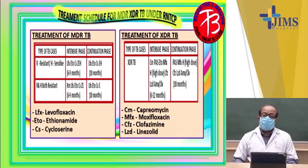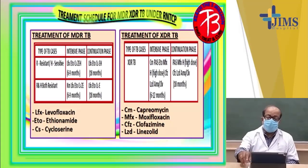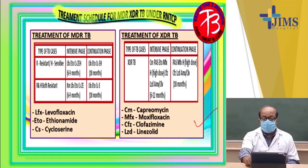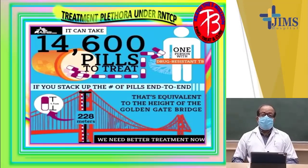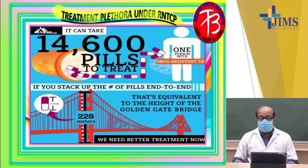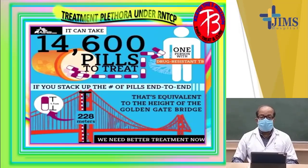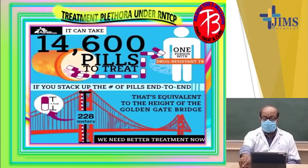The number of medicines for MDR and XDR-TB is very high and it is very difficult for the patient to take so many medicines daily. It has been calculated that it takes around 14,600 pills to treat MDR-TB, and if you stack the pills end to end, it comes to around 228 meters — the height of the Golden Gate Bridge. There is a need for further research and better treatment of MDR and XDR-TB.